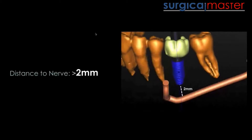I set up every software to warn me when I'm getting closer than two millimeters to the alveolar nerve, so it'll give me a warning signal. Two millimeters doesn't sound like a lot, but it's actually quite a bit of leeway. Remember that when you prepare an osteotomy, the length of your drills is very often longer than the implant — sometimes up to 1.1 millimeters longer. So if you're planning a leeway to the nerve of only one millimeter, you may be into the nerve with the osteotomy. Adhere to the two millimeter rule.